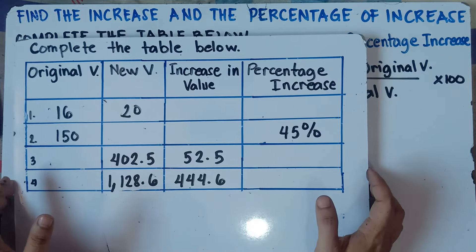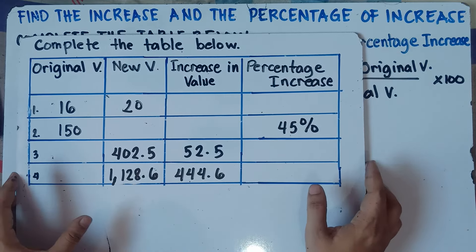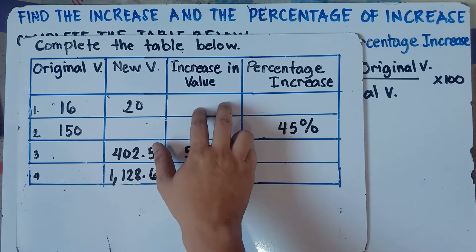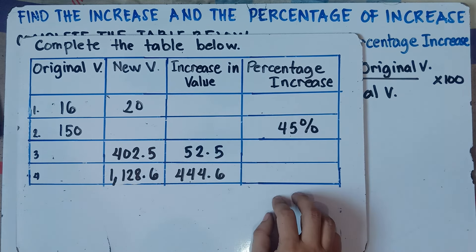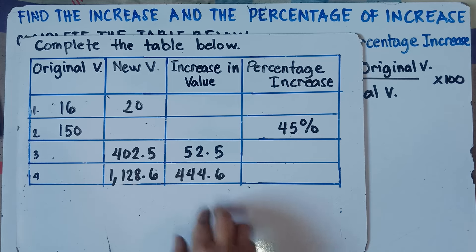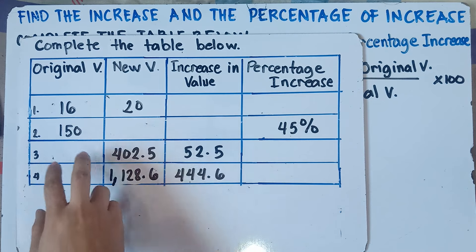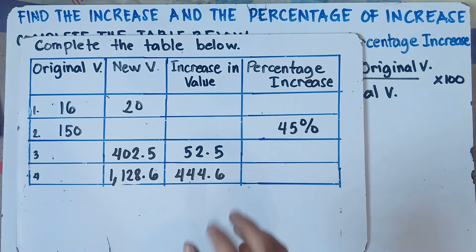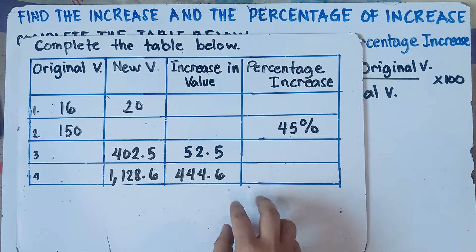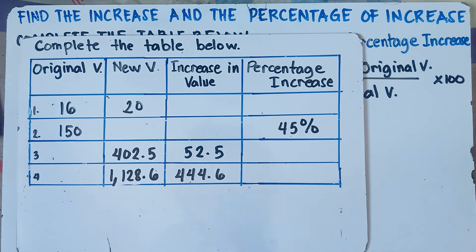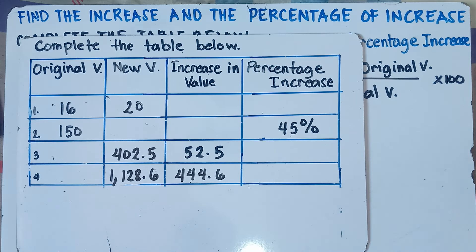The next part of our video is we're going to complete the table, but this will be quite complicated. In number one, you're told to find the increase and the percentage increase. For number two, you don't have the new value as well as the increase in value. For number three, you don't have the original value and you don't have the percentage increase. Do not be worried — we will be explaining each one step by step, and I will put the link in the description down below on how to solve them.